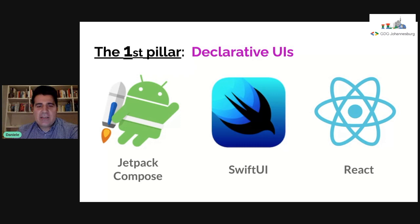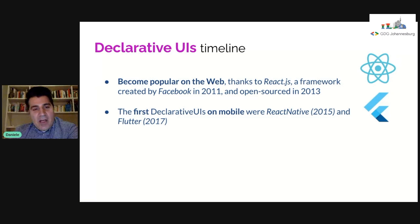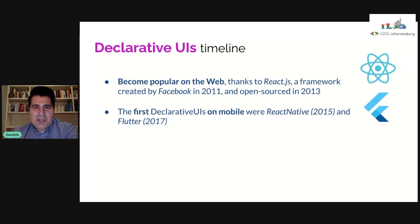Let's give a little timeline for declarative UIs. Declarative UIs became very popular on the web thanks to React.js, a framework created by Facebook in 2011 and open-sourced in 2013. On mobile, one of the first experiments was with React Native, the mobile version of React. But definitely the most important experiment so far has been Flutter, a framework you program in using the Dart language, by Google.